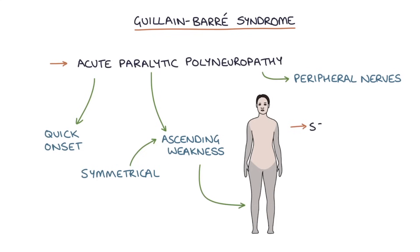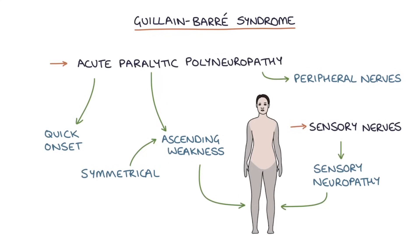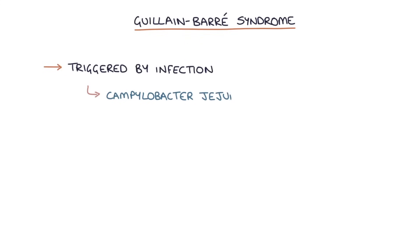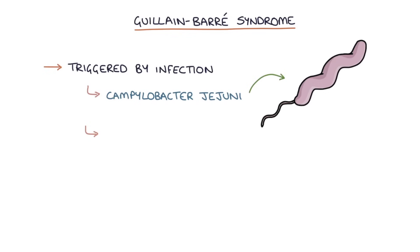It can also affect the sensory nerves, causing a sensory neuropathy. It is usually triggered by an infection and is particularly associated with gastroenteritis caused by Campylobacter jejuni, or infection with cytomegalovirus or Epstein-Barr virus.